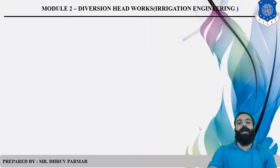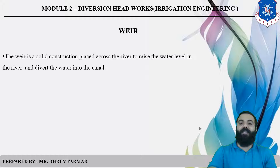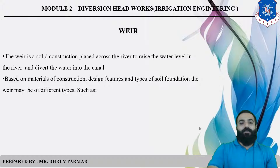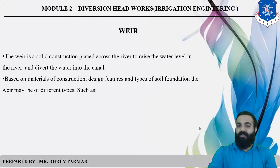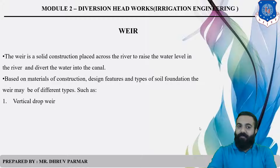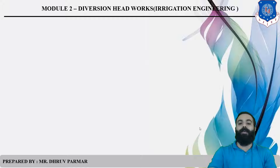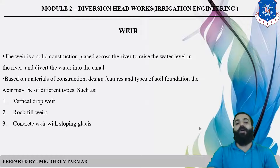First, we discuss Weir or Barrage. A Weir is one type of solid construction. It is used for raising the water level and diverting the water into the channel. Weirs are classified based on material of construction, design features, and types of soil foundation. Weirs may be of different types: Vertical Drop Weir, Rock Fill Weir, and Concrete Weir with Sloping Glacis. There are three types of Weir we will discuss in this session.